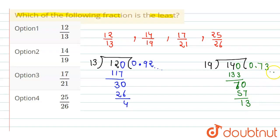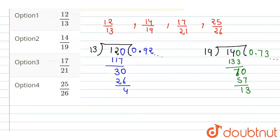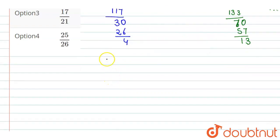Next is 17 upon 21. If we divide, 17 is smaller than 21, so 0 point. Now 170, so we try 8. 21 into 8 is 168. The remainder is 2. Now 2 is smaller than 21, so 0 again. Next 0.8 something will come.